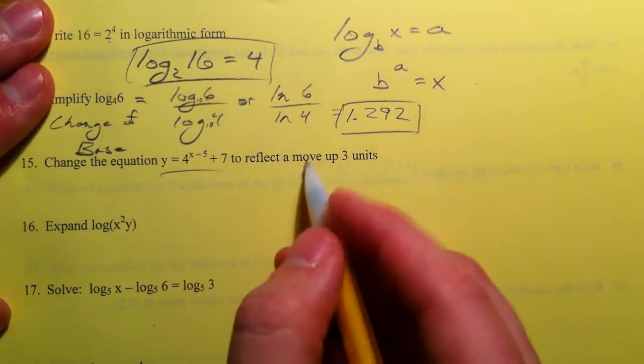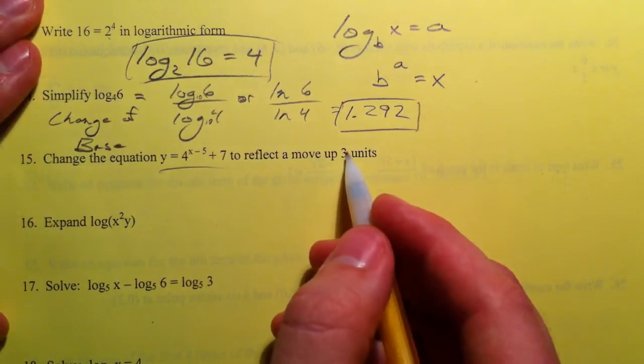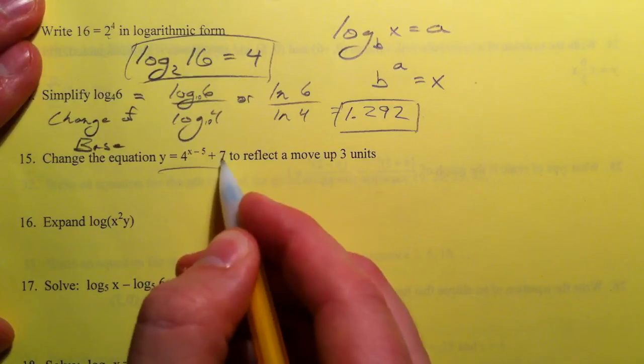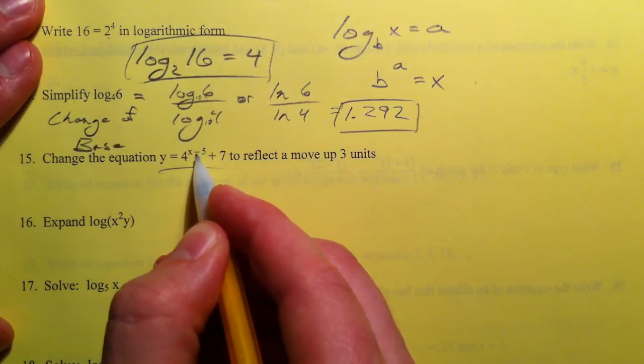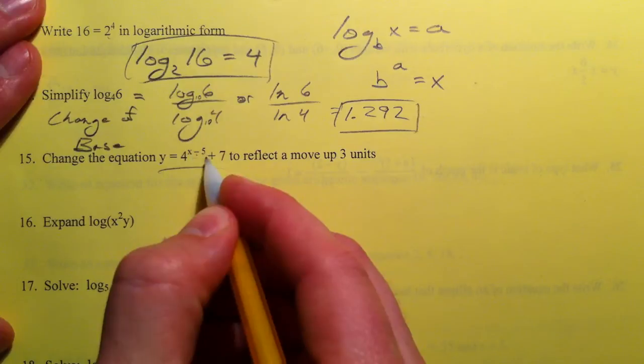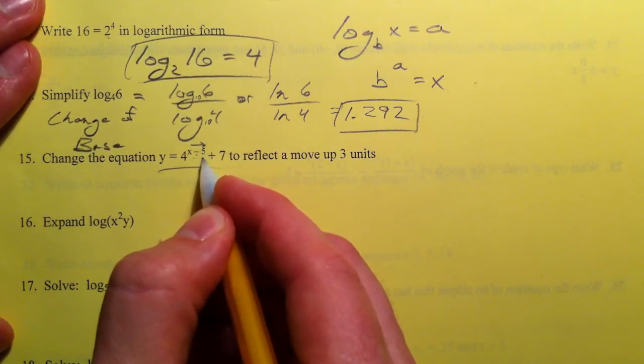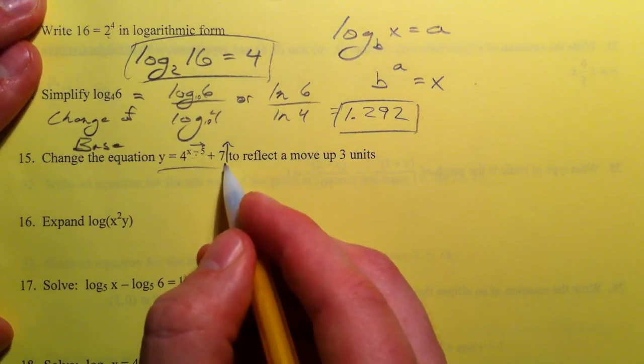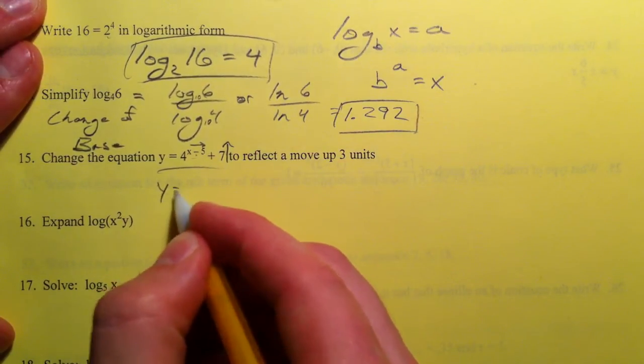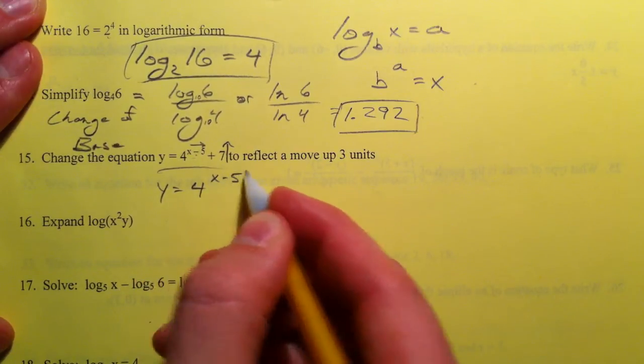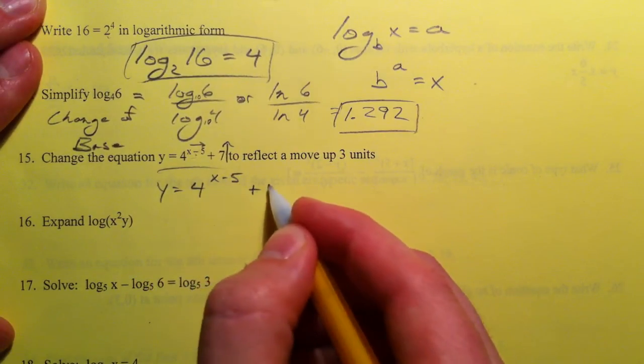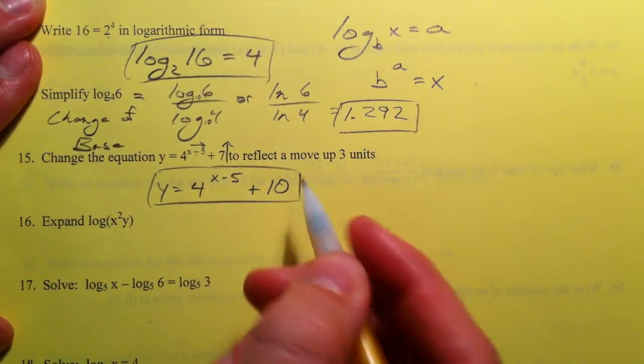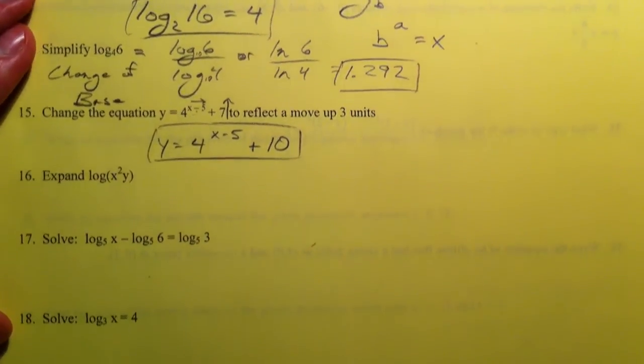Change this equation to reflect a move up 3 units. If we want to move it up, we're going to have to affect this number on the outside. This number with the x, right now the minus 5 is shifting it to the right 5. Remember that anything with the x is doing opposite what we think it should. And this plus 7 right now is moving it up 7. So if we change this, so it's 4^(x-5), and we add another 3, because we want it to go up 10.